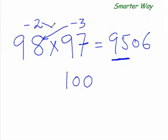Or, 97 minus 2 is again 95. So whether you do 98 minus 3 or 97 minus 2, it's one and the same thing.